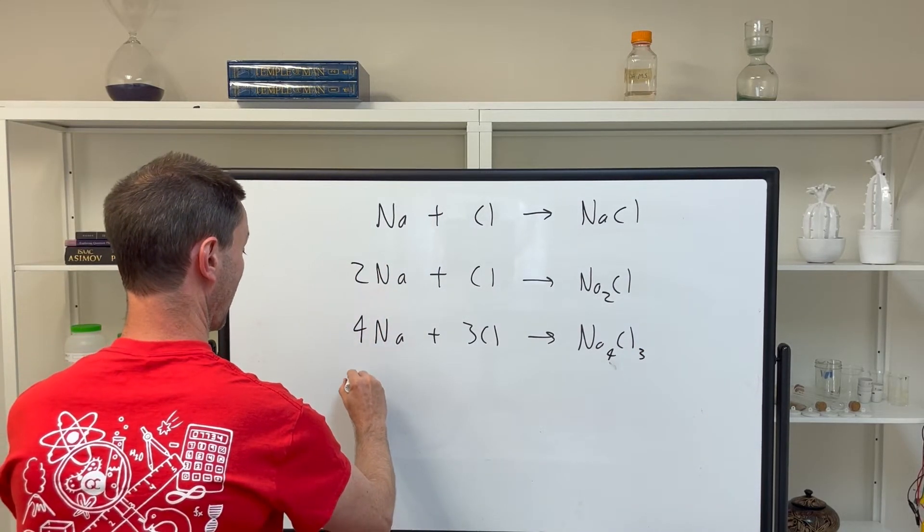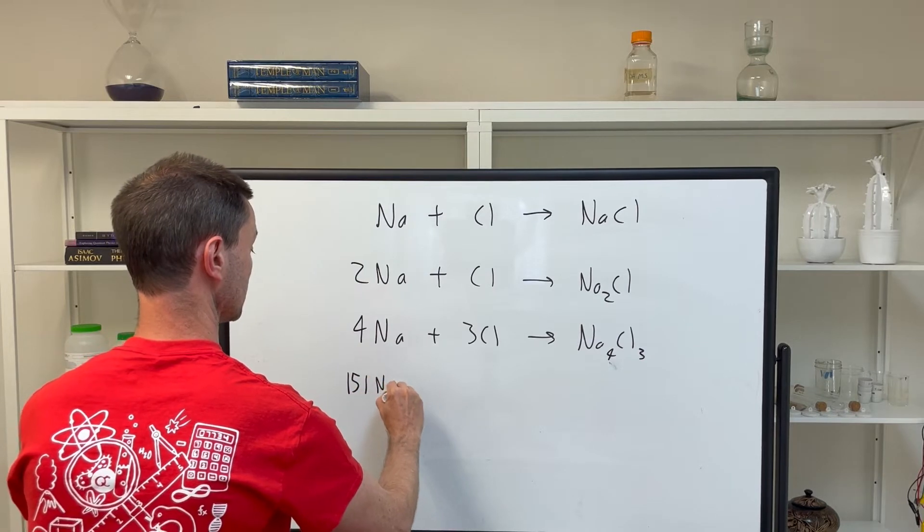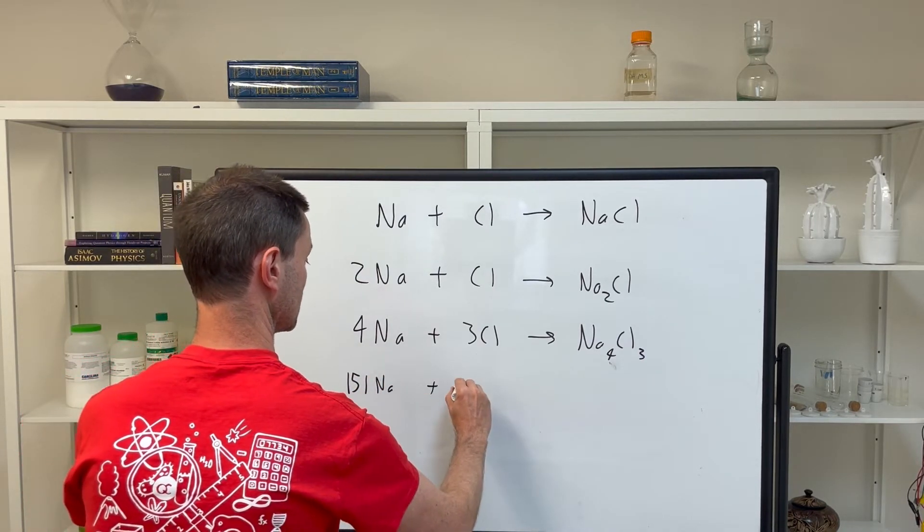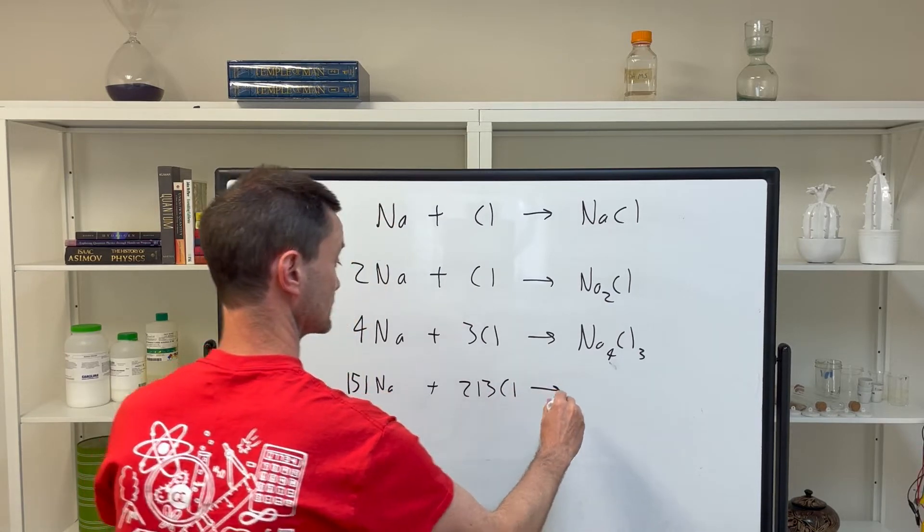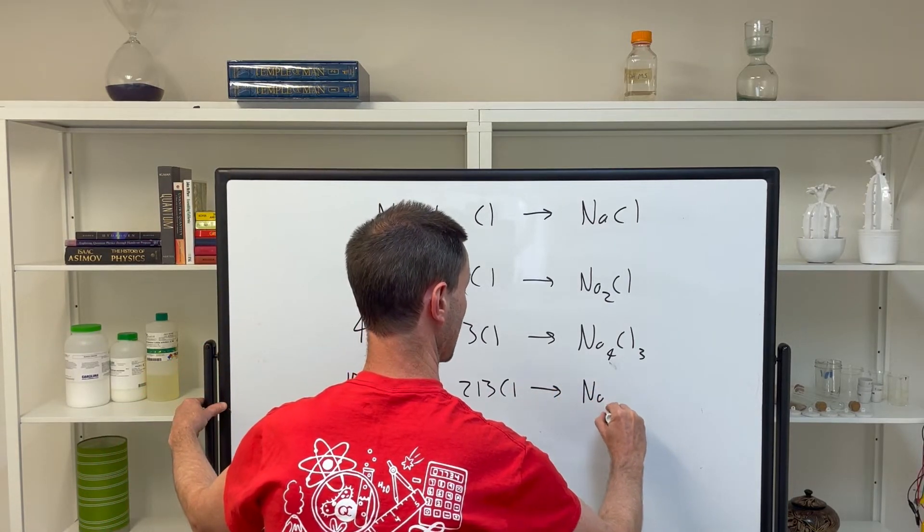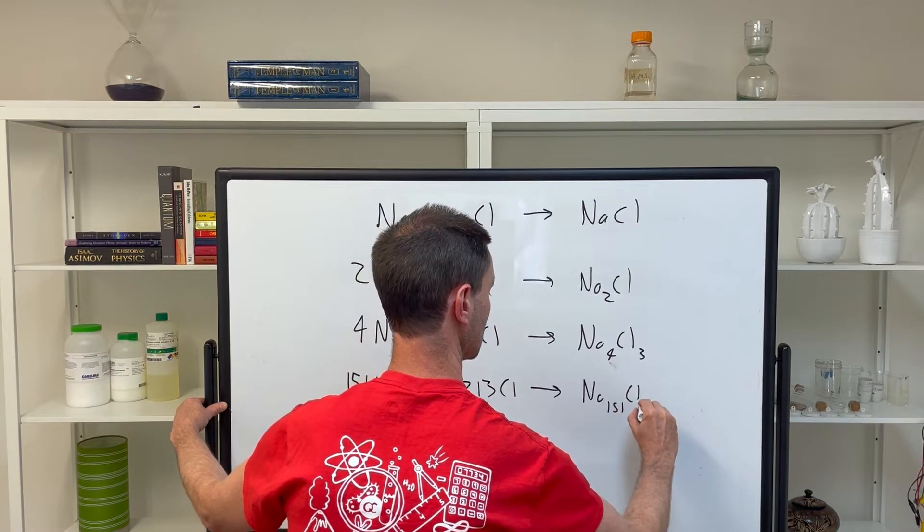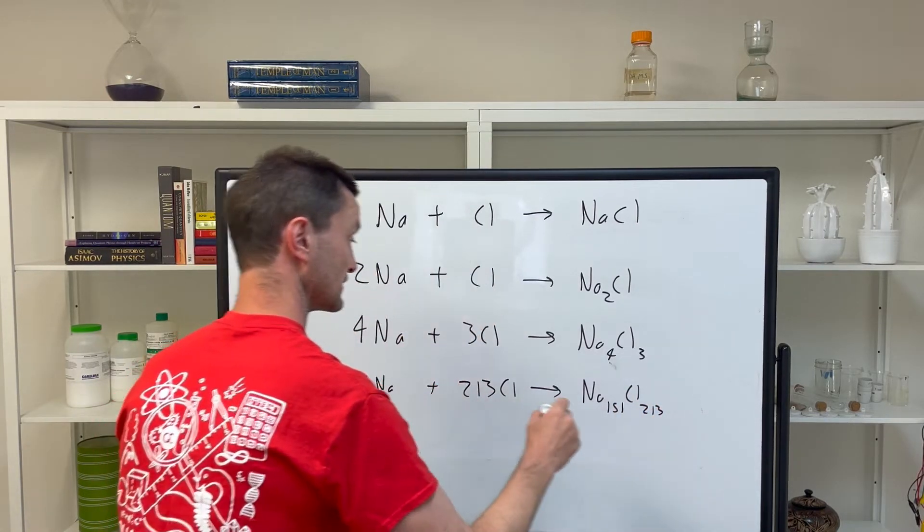Or what if it's 151 sodium atoms plus 213 chlorine atoms, gives Na151Cl213, table salt.